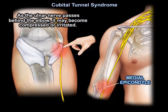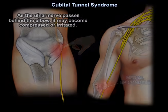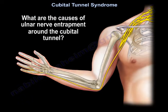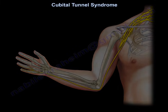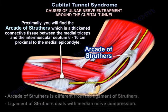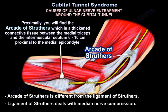If the ulnar nerve passes behind the elbow, it may become compressed or irritated. The causes of ulnar nerve entrapment around the cubital tunnel include, proximally, the arcade of Struthers, which is a thickened connective tissue between the medial triceps and the intermuscular septum, 6 to 10 cm proximal to the medial epicondyle.